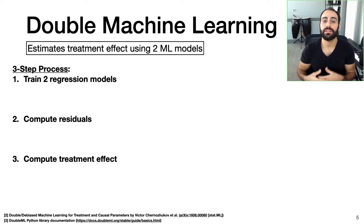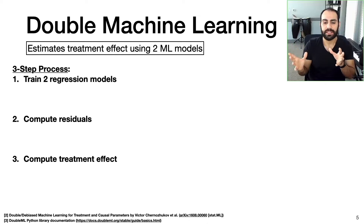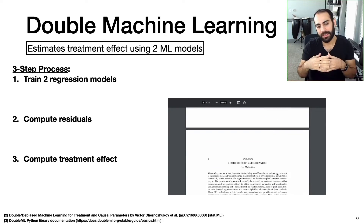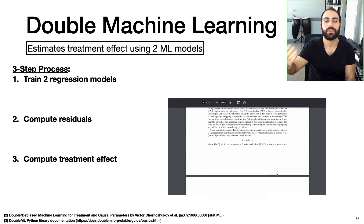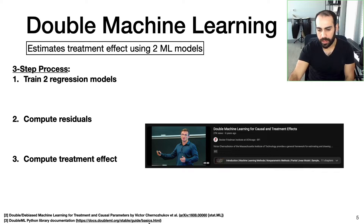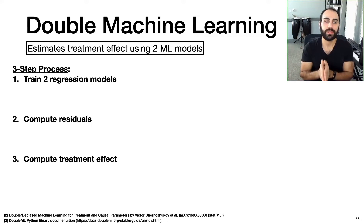One such technique is called double machine learning. The idea is we estimate the treatment effect using a three-step process in which we develop two separate machine learning models. Double machine learning can seem daunting at first — the paper is about 70 pages with a lot of math and abstract ideas. But upon reading through the paper and watching a talk by the first author on YouTube, which I can link below, this whole process can be broken down into a simple three-step process.